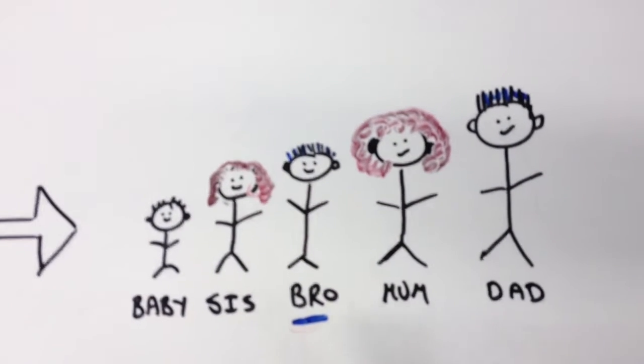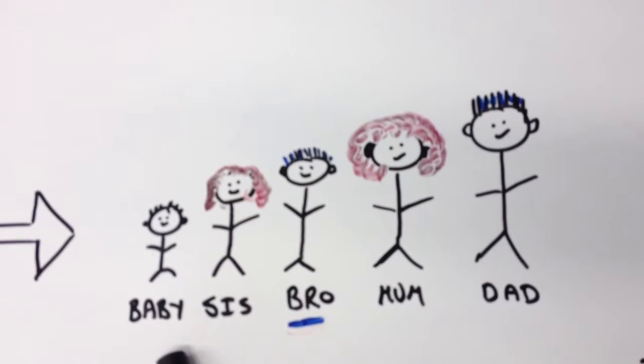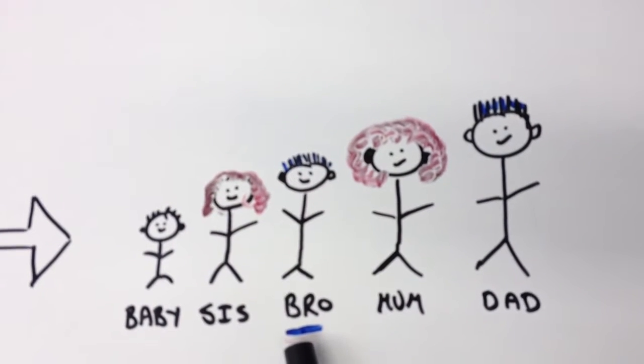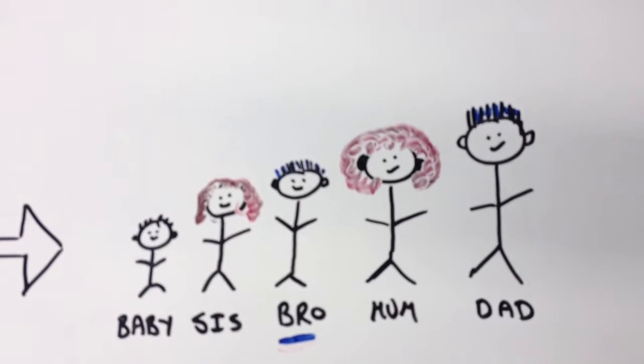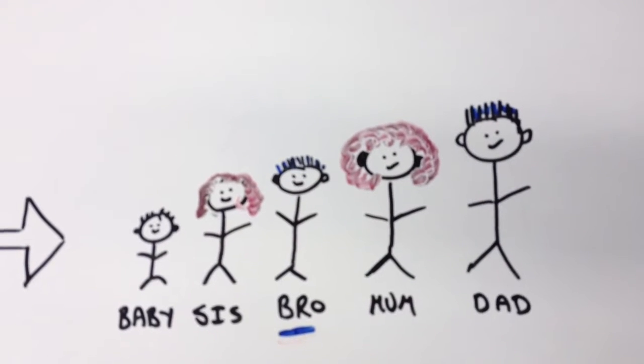Then I need to find the middle person of that group. There's five people in their family, so that makes Bro the middle person. He will be the median of the median family.